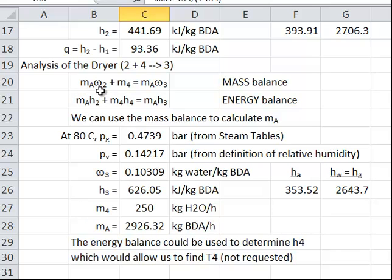The mass balance, I'm going to be looking for m sub a. I have ω2, I have m4, I need ω3. So ω3 is going to be found using the vapor pressure, the steam tables at 80 degrees C. So 30% relative humidity, this gets me the partial pressure of the water vapor.